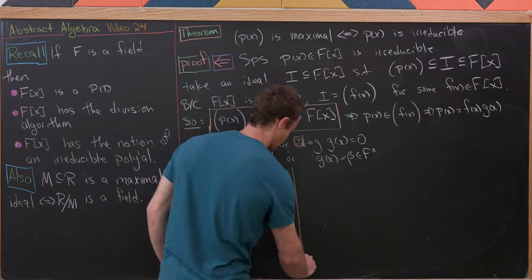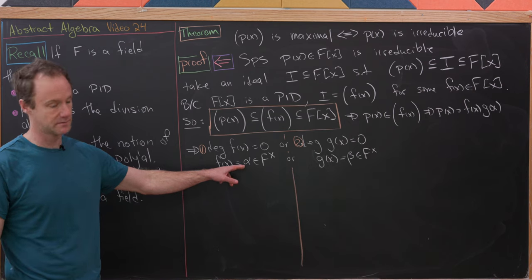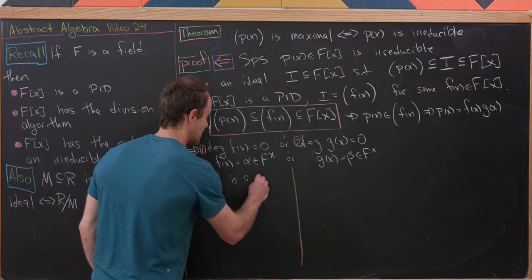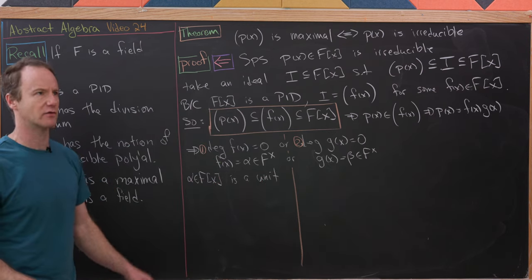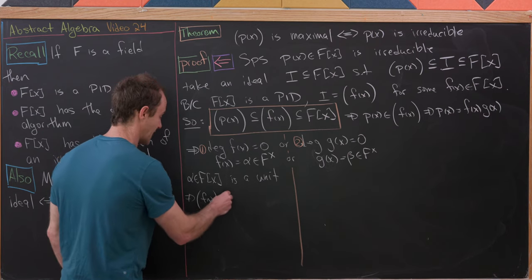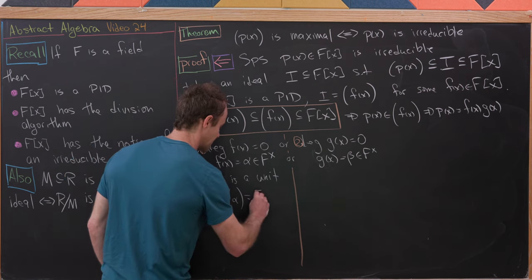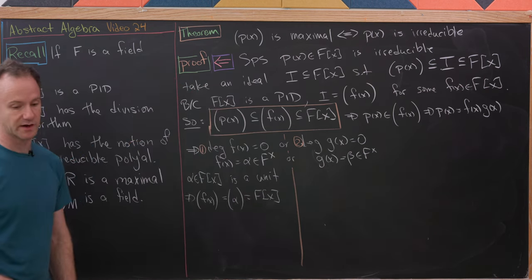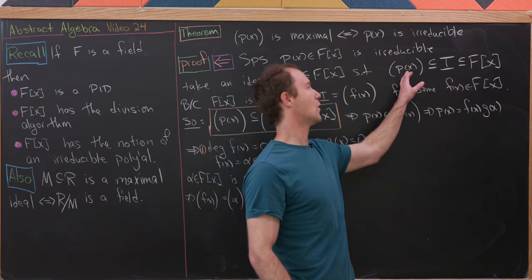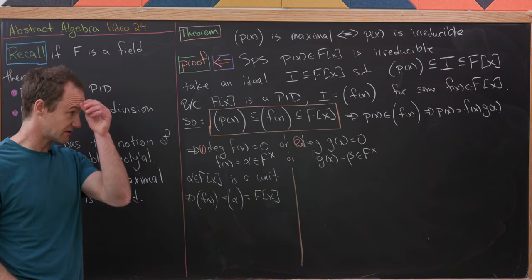Case 1: deg(F) = 0, so F(X) = α is a constant polynomial, hence a unit in F[X] (since it's a unit in the ground ring). Therefore ⟨F(X)⟩ = ⟨α⟩ = F[X], the whole ring. That's one scenario we wanted — either I equals the whole ring or I equals ⟨P(X)⟩.